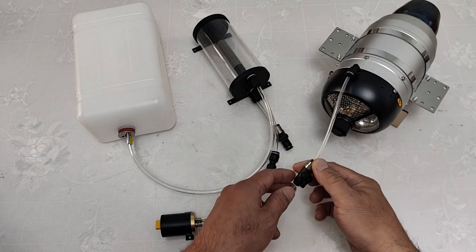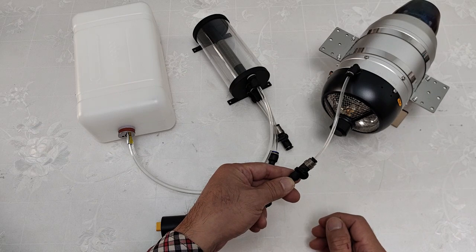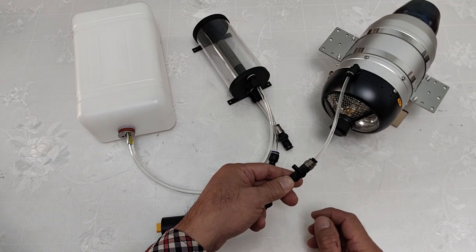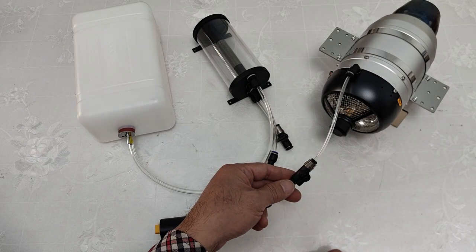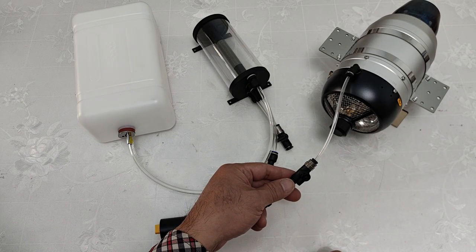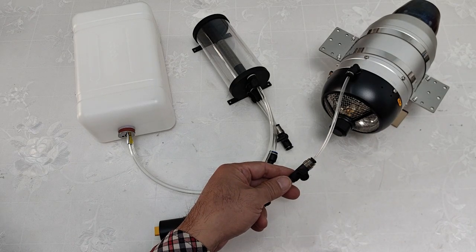There are two functions for the ball valve. When we store the jet, we can close it. If sometimes we meet a big flameout outside of the turbine, we can close the ball valve to stop fuel.